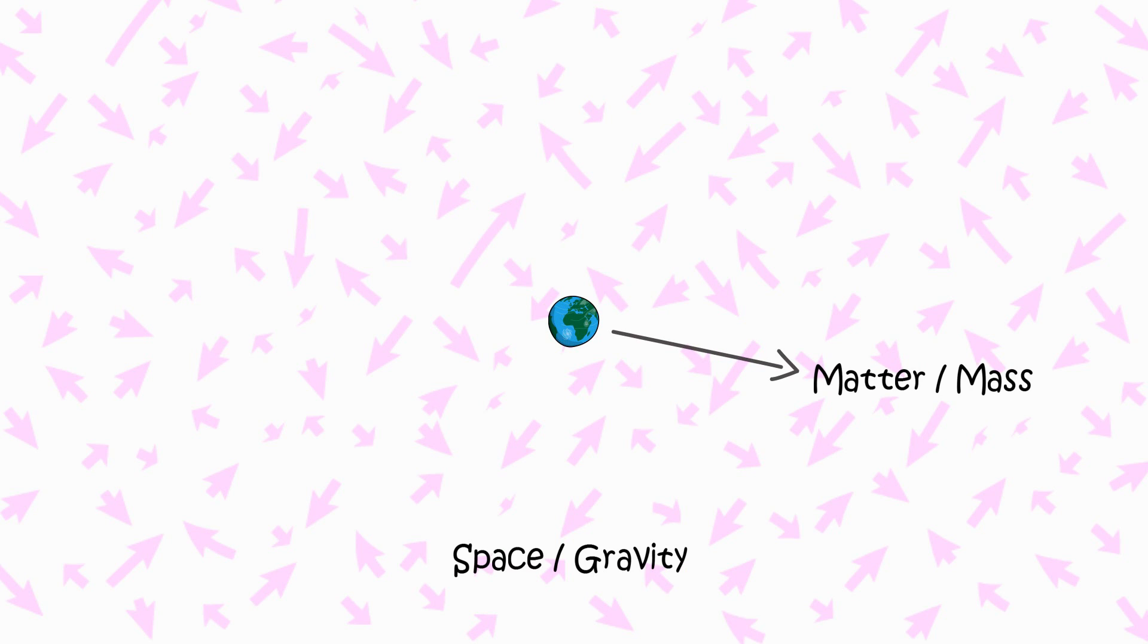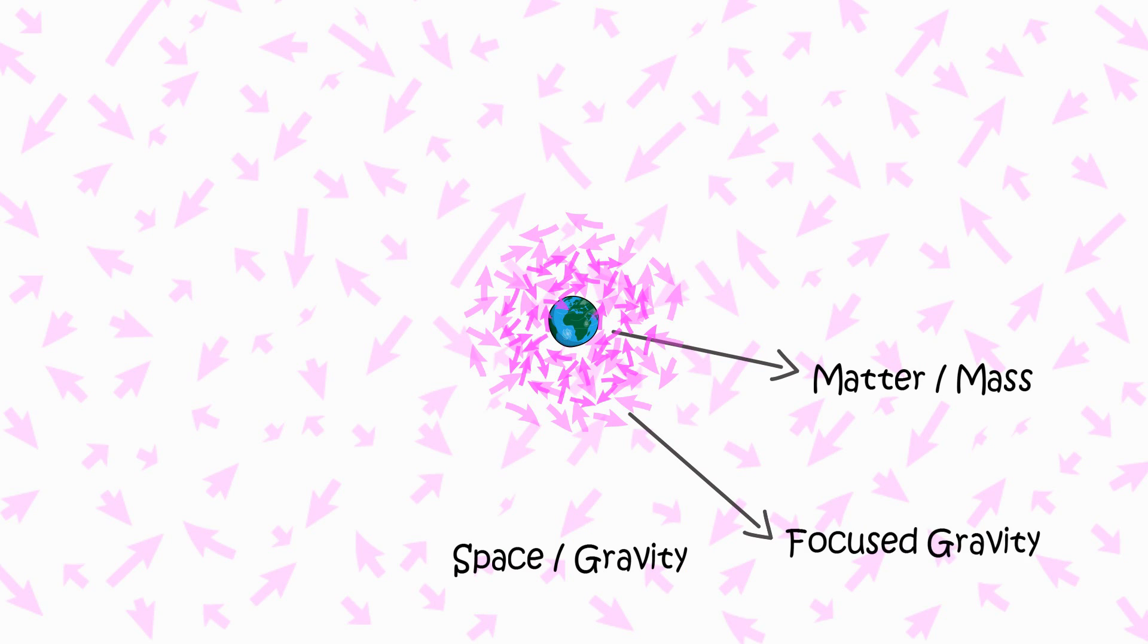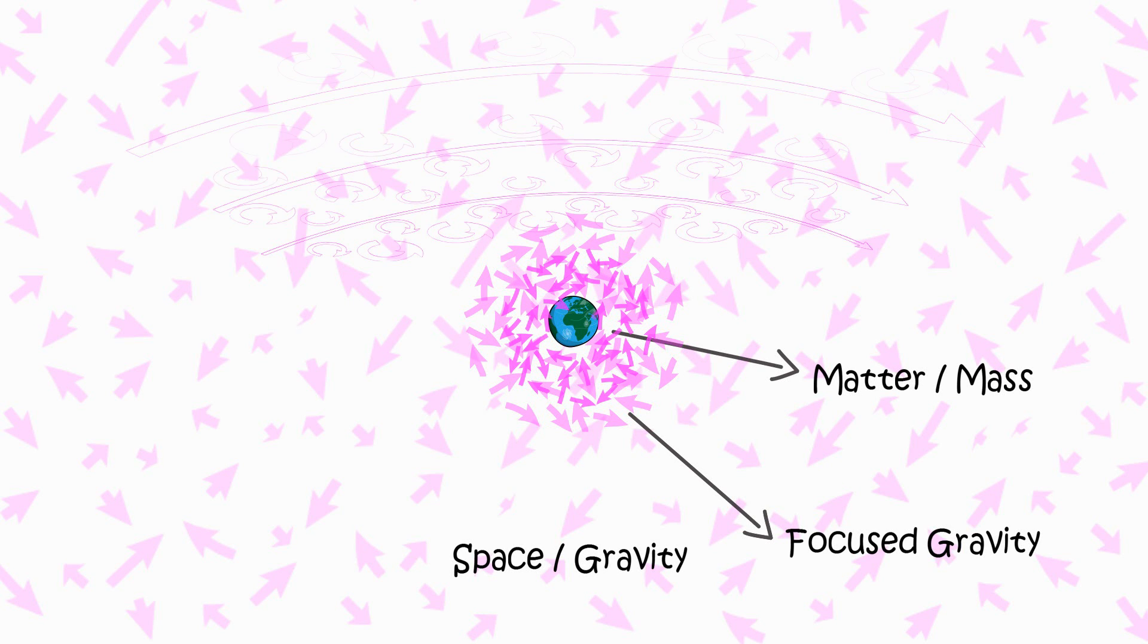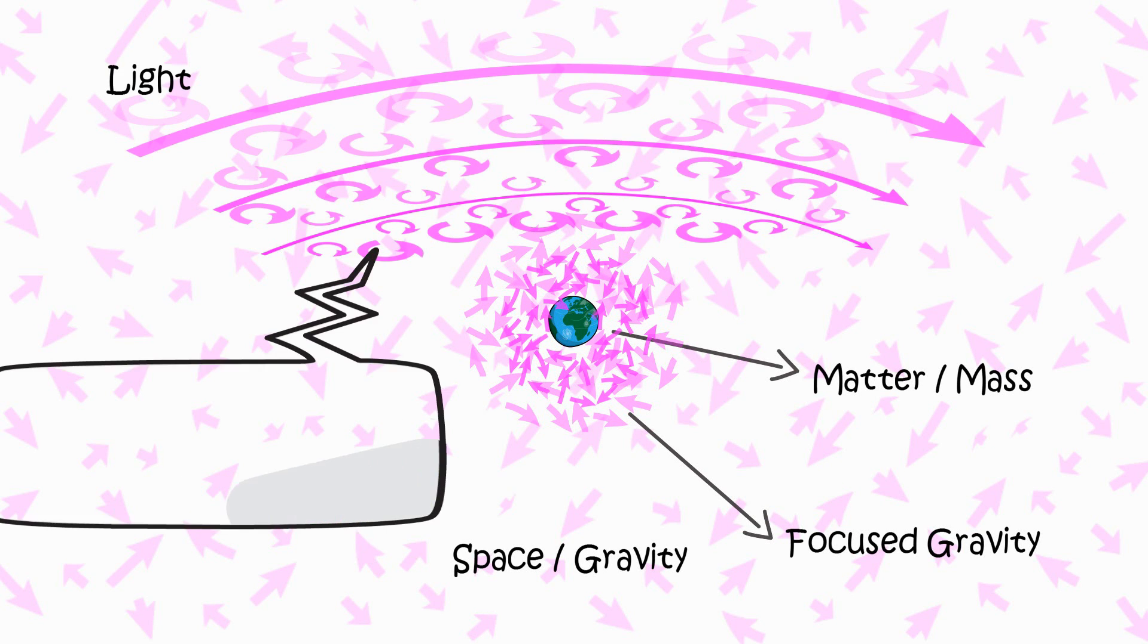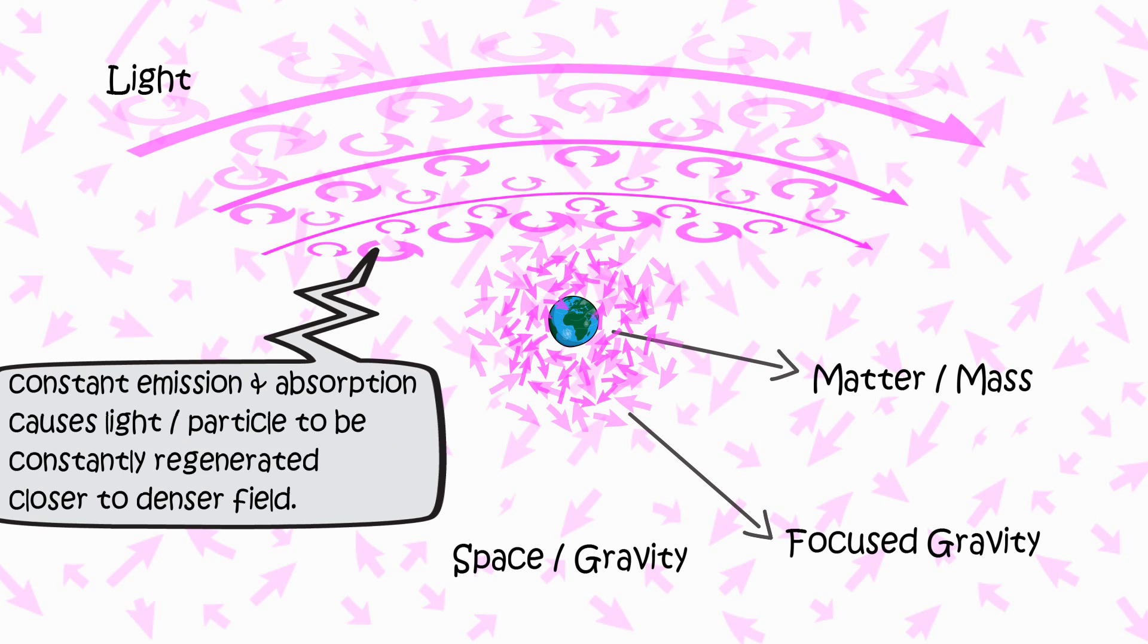The gravity effect. Light and traveling matter bends towards denser momentum field, aka gravity, because they are made out of momentum, constantly emitting and absorbing momentum. And is regenerated closer to denser momentum field, constantly.